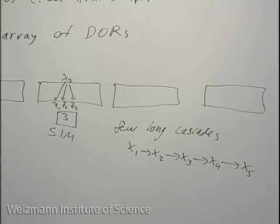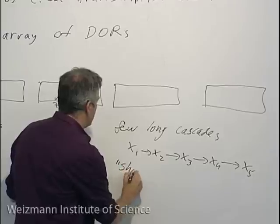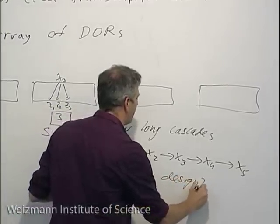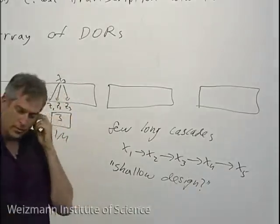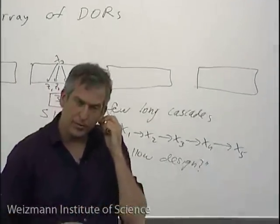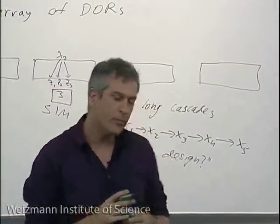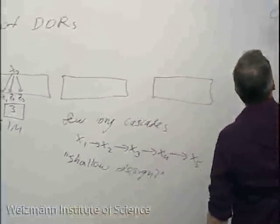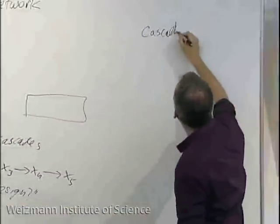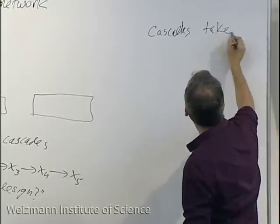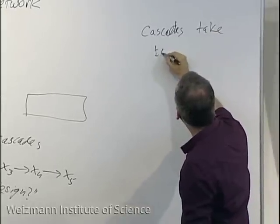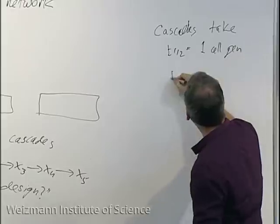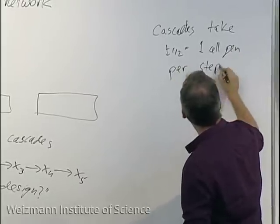The overall structure is extremely shallow — the number of steps from the signal to the output genes is small: usually one step, sometimes a cascade of two steps, rarely three steps, and the world record is five steps. The reason we think is response time. Cascades take about one cell generation per step to respond — X1 gets a signal, activates X2, X2 needs to be produced across its activation threshold for X3. Response time in E. coli is on the order of a cell generation.